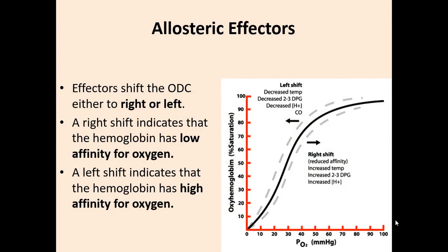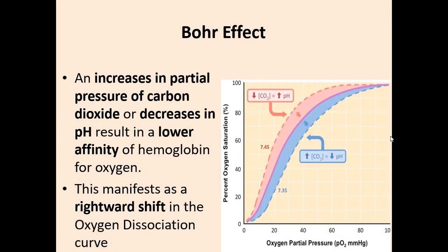Allosteric effectors shift the oxygen dissociation curve either to the right or left. A right shift indicates hemoglobin has low affinity for oxygen; a left shift indicates high affinity. The Bohr effect: an increase in partial pressure of carbon dioxide or a decrease in pH results in a lower affinity of hemoglobin for oxygen. This manifests as a right shift in the oxygen dissociation curve. The Bohr effect facilitates oxygenation of hemoglobin in the lungs and deoxygenation in the tissues.